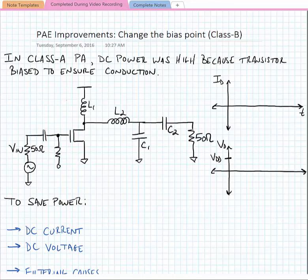Okay, so now we're going to talk about some efficiency improvements that we can make based on changing the bias point. And this is going to be about a class B amplifier. So in a class A power amplifier, the DC power that's consumed is high because the transistor is biased to ensure that it is always conducting.